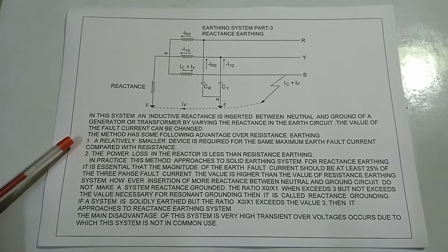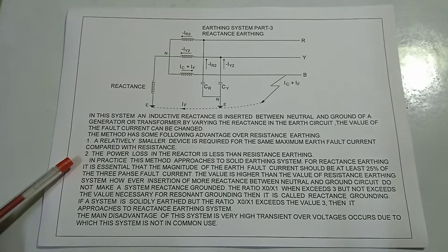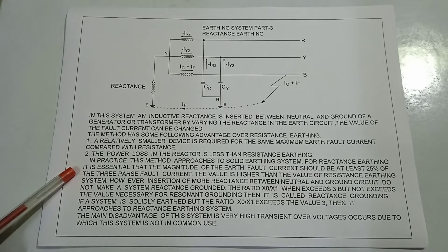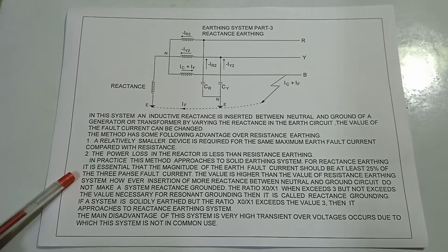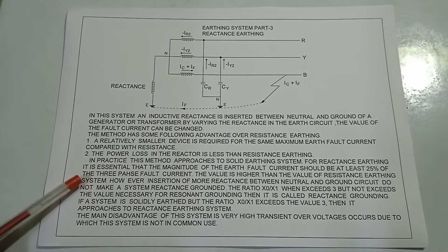First, a relatively smaller device is required for the same maximum earth fault current compared with resistance. Second, the power loss in the reactor is less than resistance earthing. In practice, the method approaches solid earthing. For reactance earthing, it is essential that the magnitude of the earth fault current should be at least 25% of the three-phase fault current.